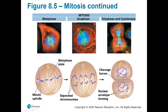That leads us to anaphase. An easy way to remember anaphase is that the chromosomes are being pulled apart — 'A for apart.' The chromosomes will be pulled to the two different poles, the two different sides of the cell, being pulled by those spindle fibers. I always think of them as little roadways for the chromosomes to travel along.